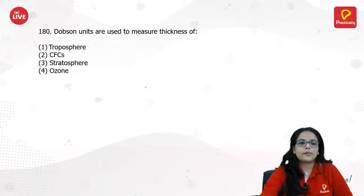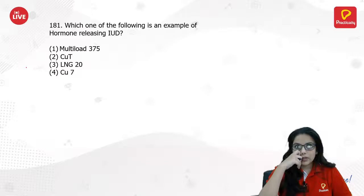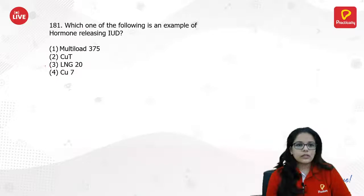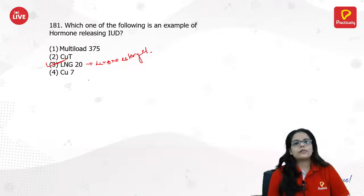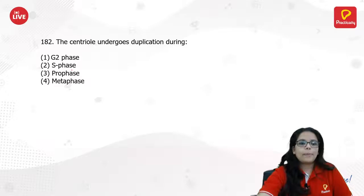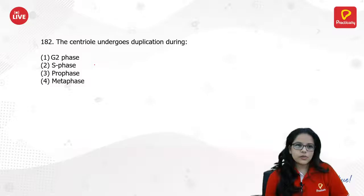Dobson units are used to measure ozone. Which of the following is an example of a hormone-releasing IUD? LNG-20 or LNG-30 releases levonorgestrel — that kind of hormone is released by the LNG-20 IUD.